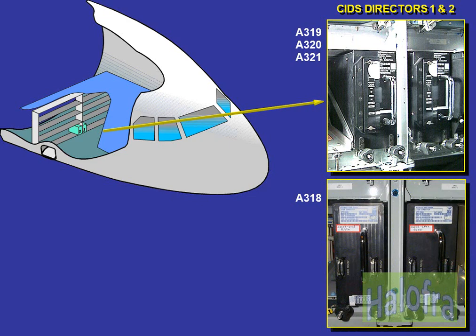The main components of the CIDS are the directors. Director 1 is active and director 2 is in hot standby in normal operation. On the A318, the directors are new; they integrate the vacuum system control function and the smoke detection function.